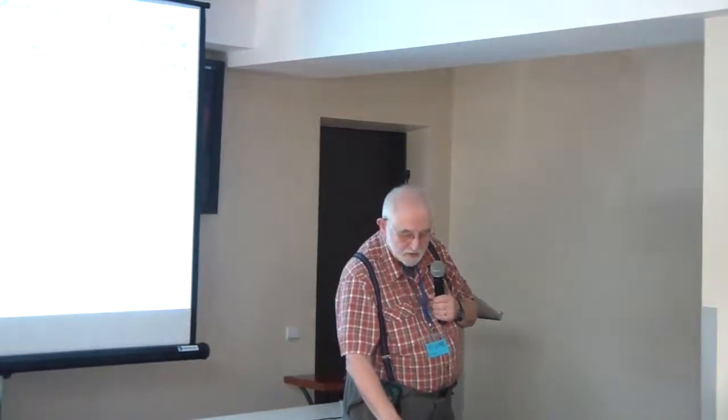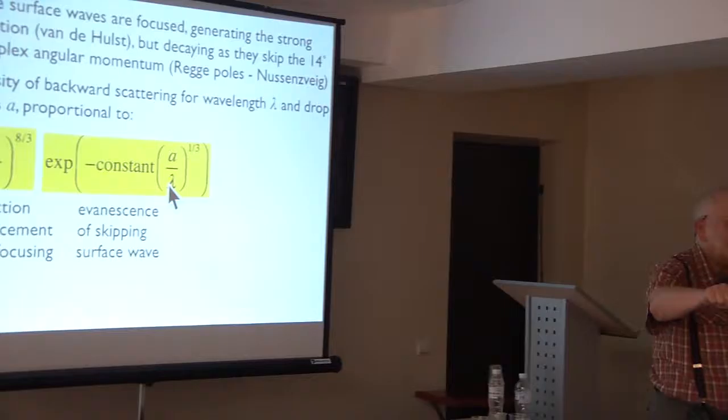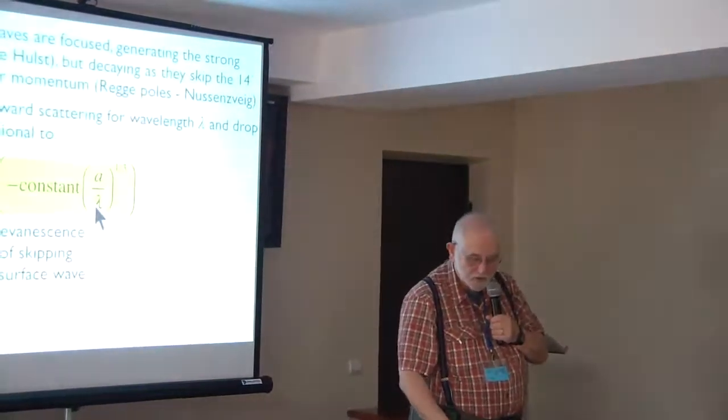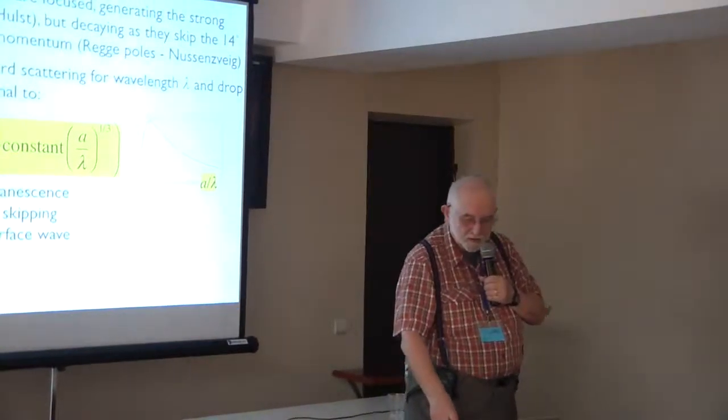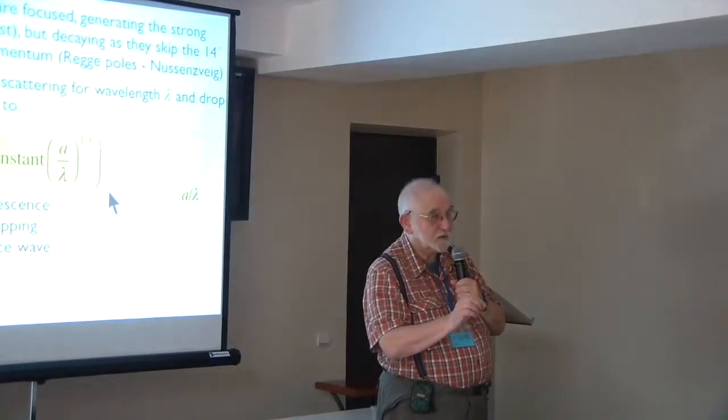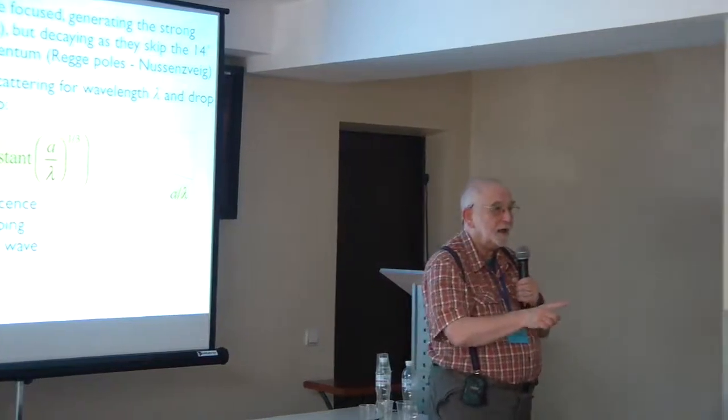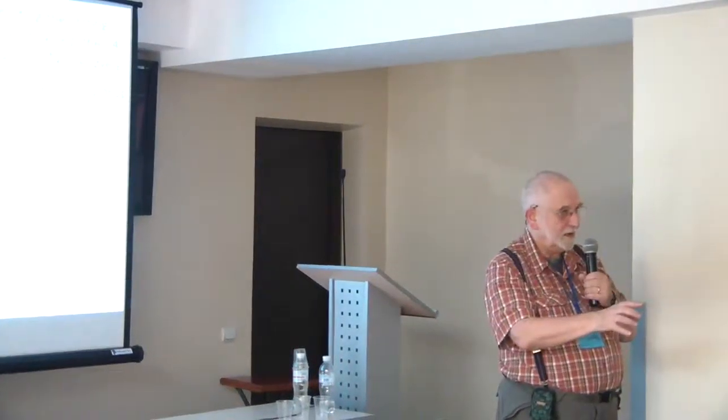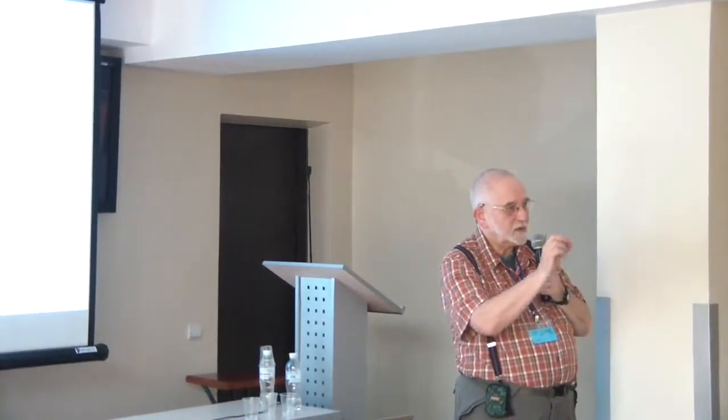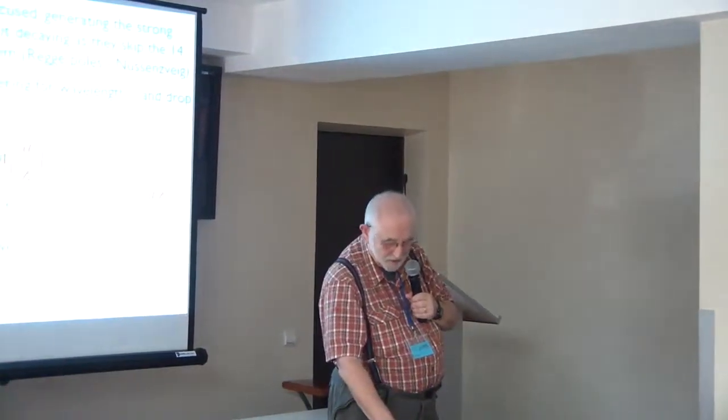But these are not ordinary waves, these are evanescent decaying waves, and there's an additional factor which gets smaller the smaller the wavelength is, because the smaller the wavelength is, the more wavelengths it has to travel to skip those 14 degrees. So you get this very curious circumstance: you get a function that's small for small wavelengths and small for large wavelengths. Only intermediate sizes of drop compared to the wavelength give a substantial reflection, and that's why you don't see the glory in rain, you see it in mist halfway between. It's small, a few tens of micron sizes of drops.